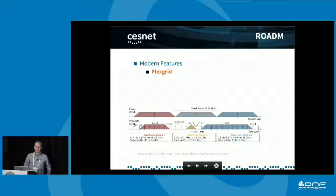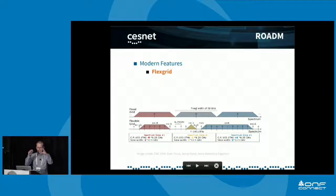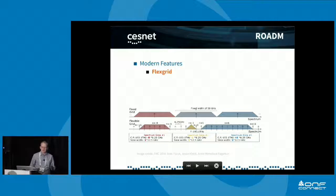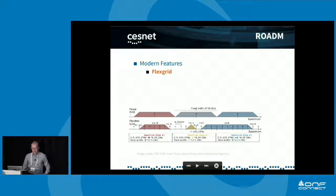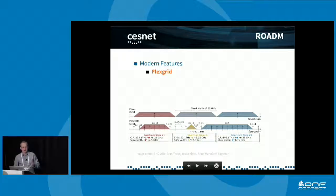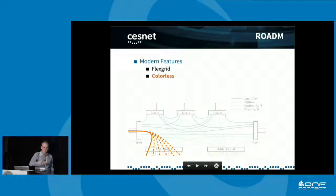There are several desirable properties you want a modern ROADM to have. One is FlexGrid. Previously, the C-band — the range of frequencies suitable for long-haul transmission — was divided into a fixed number of channels, originally 100 GHz wide, then halved to 50 GHz. Today, the allocation is very flexible: signals can be almost arbitrarily wide and their central frequencies no longer need to be aligned. Our ROADM supports all these features.